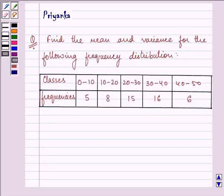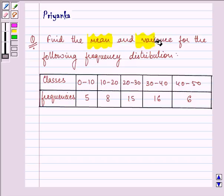Hello friends, how are you all today? The question says find the mean and variance for the following frequency distribution.